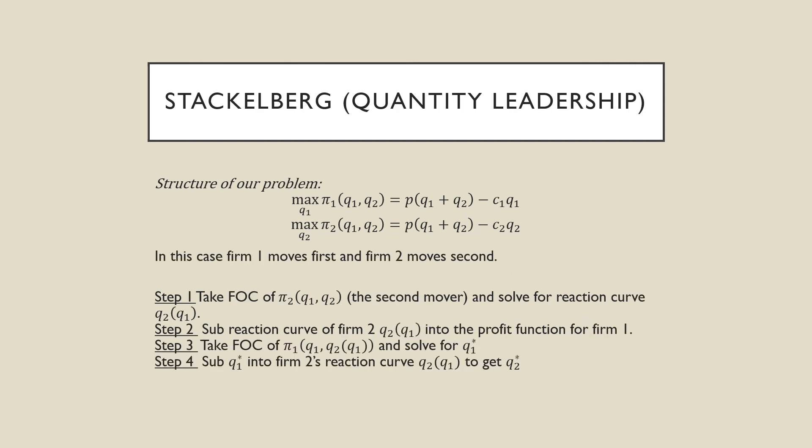For Stackelberg, we have the same structure of the problem, but in this case firm 1 moves first and firm 2 moves second. For step 1, we take the first order condition of firm 2's profit function — our second mover — and solve for the reaction curve. Step 2, we substitute the reaction curve of firm 2 into the profit function of firm 1. Step 3, we take the first order condition of firm 1 and solve for Q1*. Step 4, we substitute Q1* into firm 2's reaction curve to get Q2*.